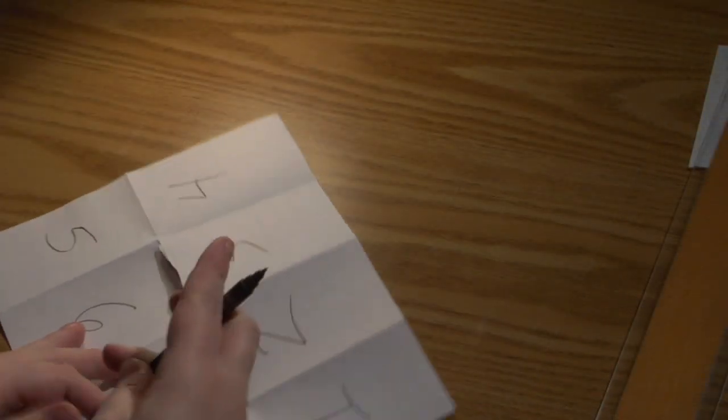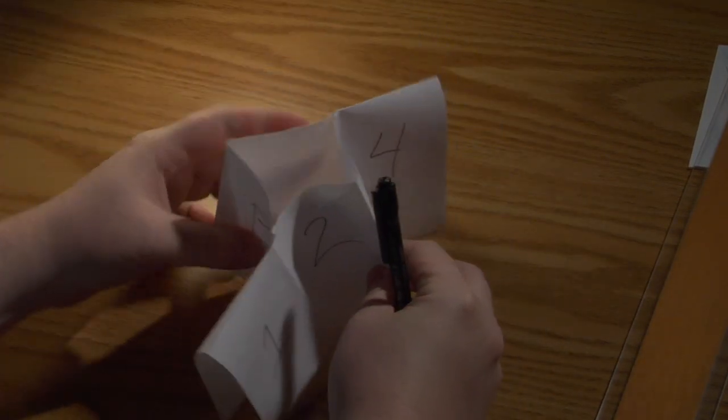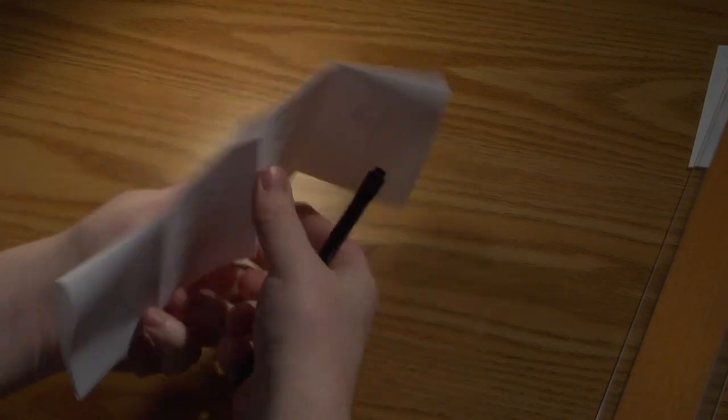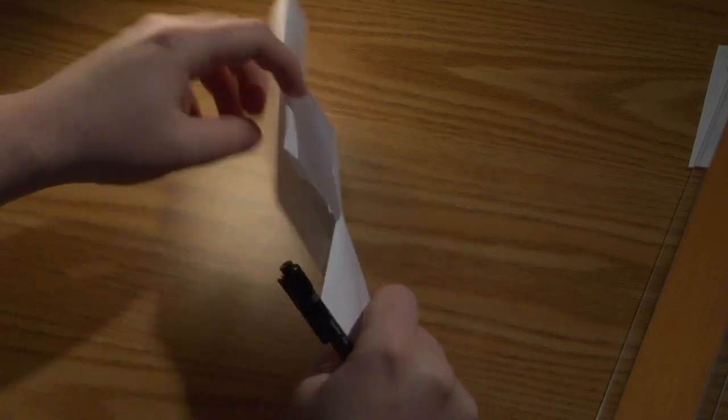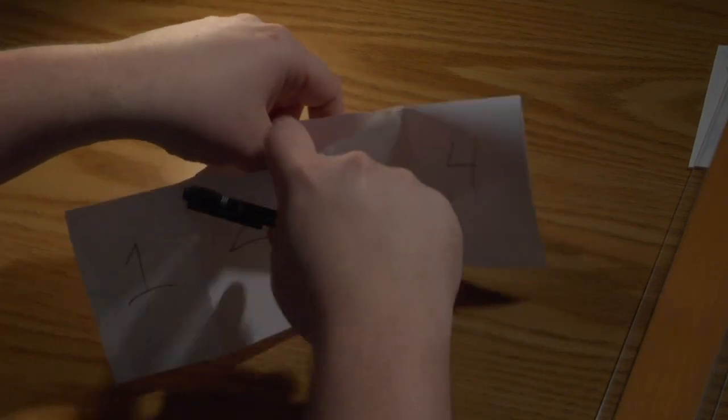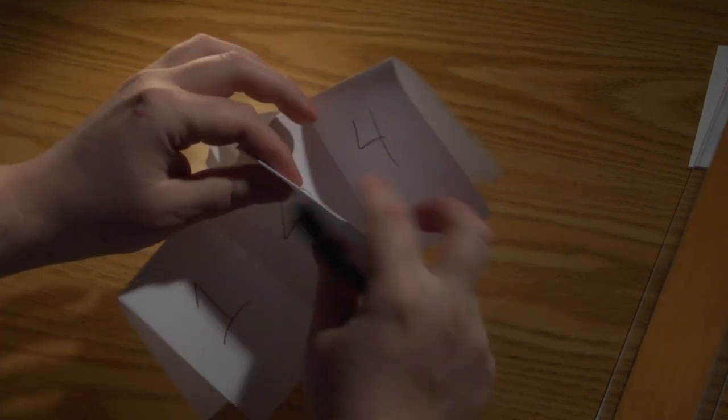Then you take it and you fold it over like this. Fold it over like this so you have all in half. And then you take these two pages, or these two places where the slits are, and then you fold them in.